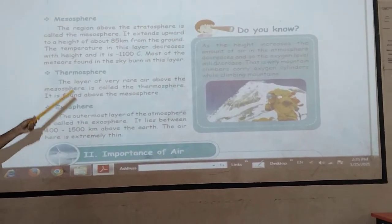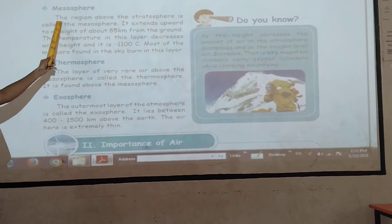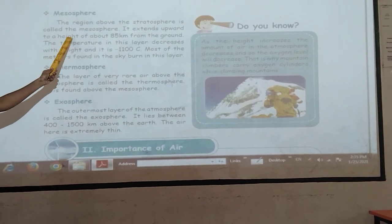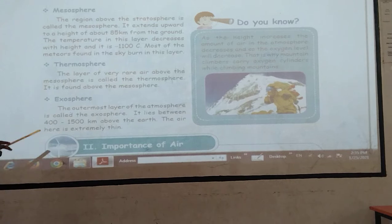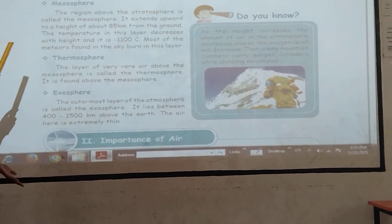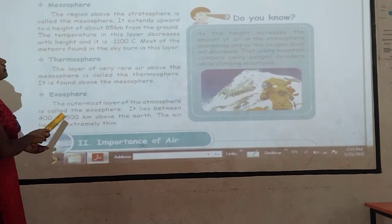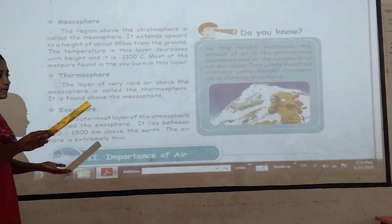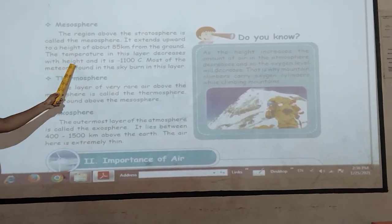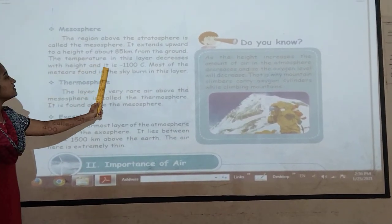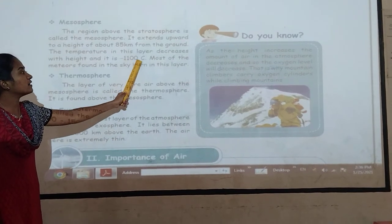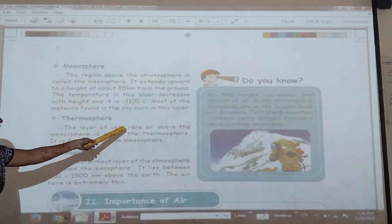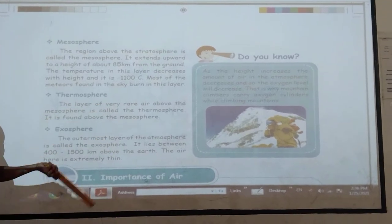Then Mesosphere — the region above the Stratosphere is called the Mesosphere. It extends upwards to a height of 85 km from the ground. The temperature in this layer decreases with height. It is minus 110 degrees Celsius. Most of the meteors are burned in the sky in this layer.